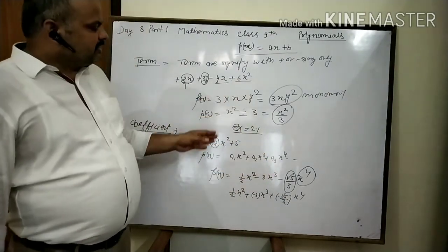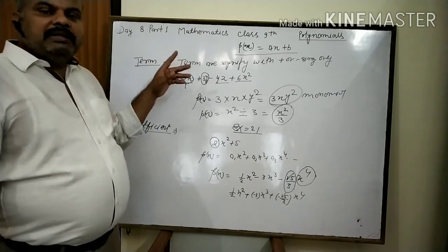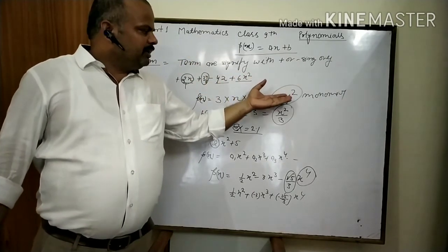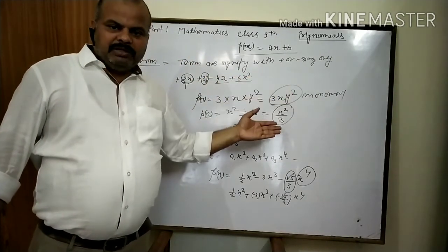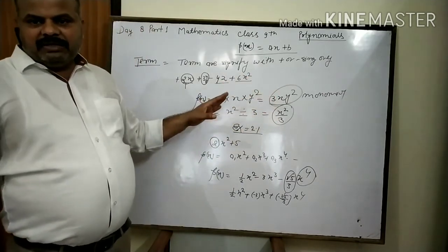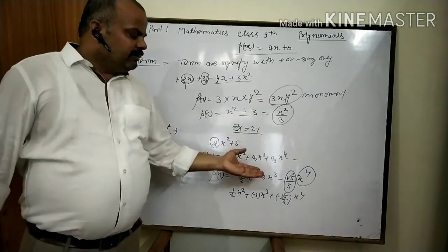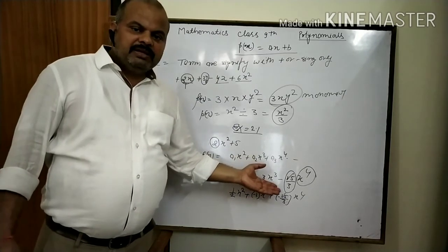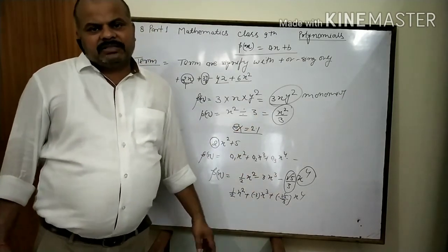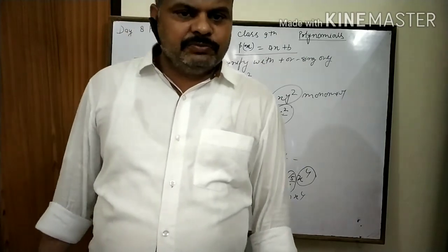Now everyone is clear about what a coefficient and a term are. In Exercise 2.1 there are only 2 or 3 questions: identify which expression is a polynomial, what type of polynomial it is — monomial, binomial, trinomial — how many terms, and what degree. This has already been discussed, so you can solve Exercise 2.1 now. Okay, thank you.